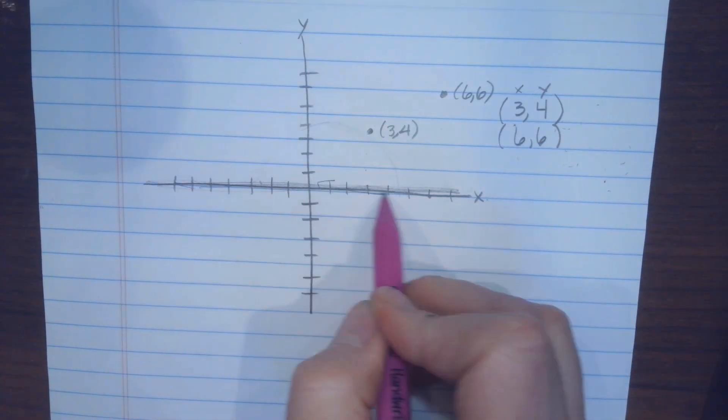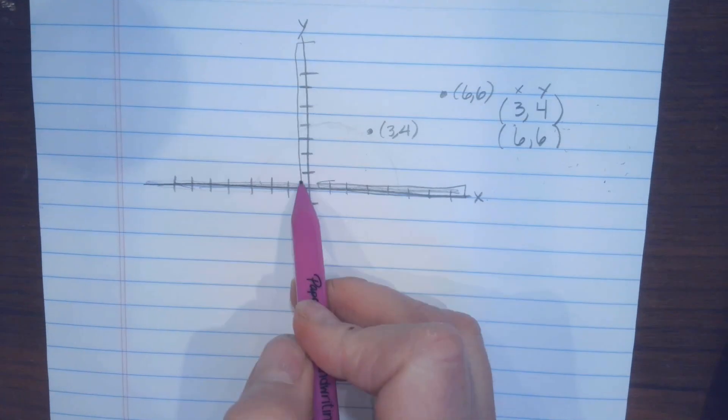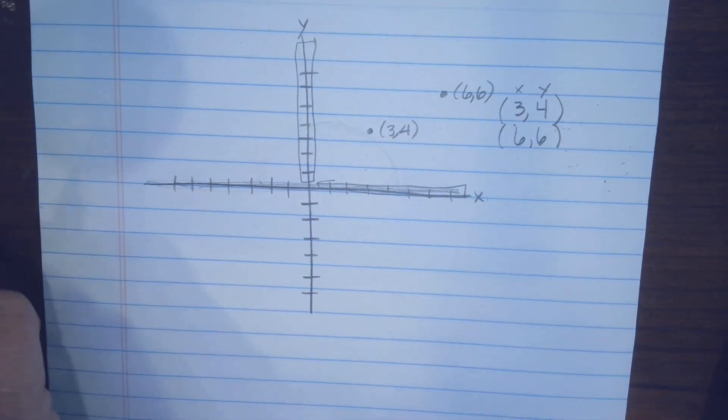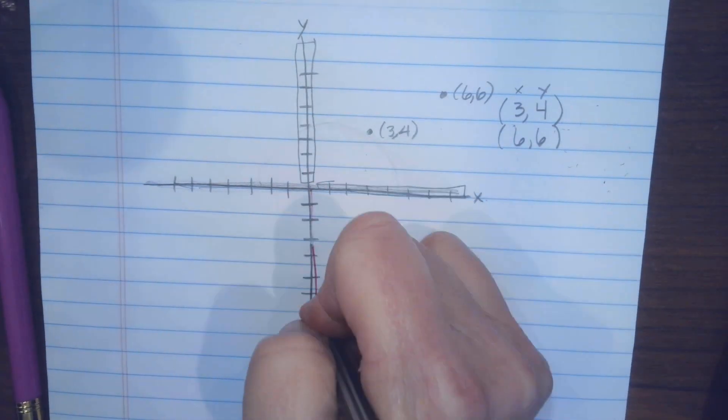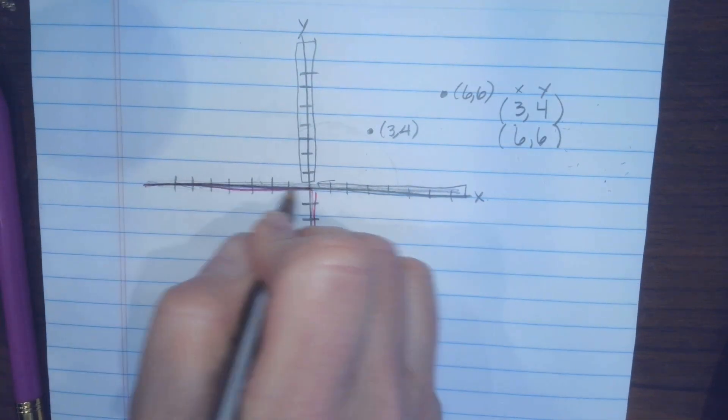So these right here are positive numbers, and these right here are positive numbers, but this is where our negative numbers go and this is where our negative numbers go.